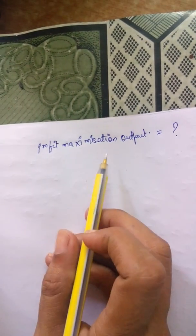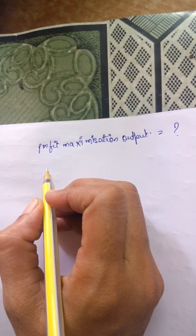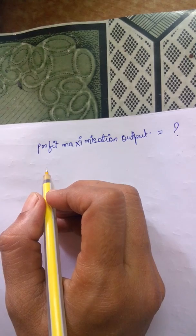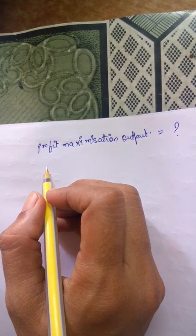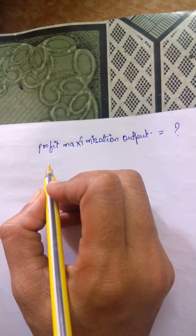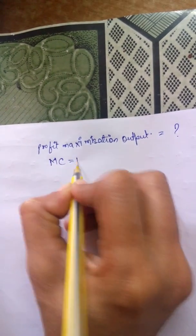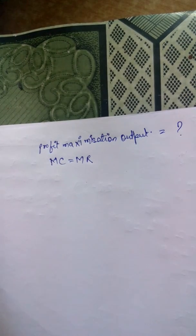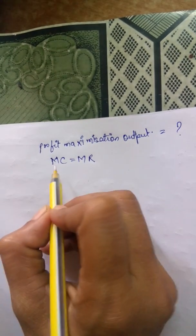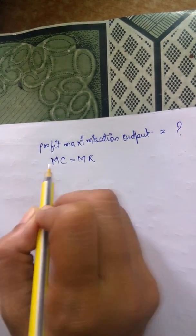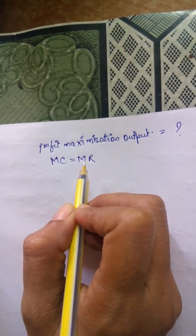First, we need to know the profit maximization condition for any market form, whether it is monopoly, monopolistic competition, or any other form. The profit maximization condition is MC equals MR. For this, we should know what is MC and what is MR. If we know both, we will equate the equation and find the value of Q, which is the output.